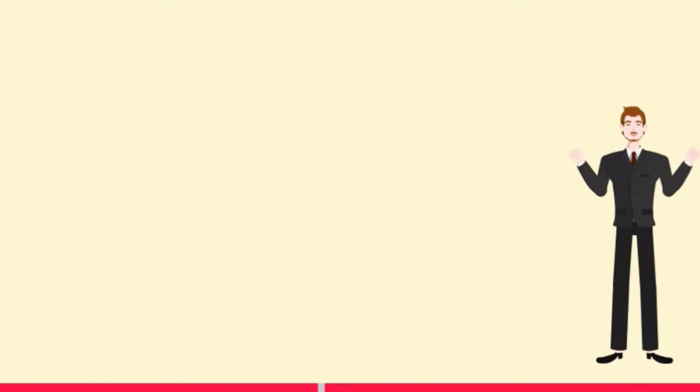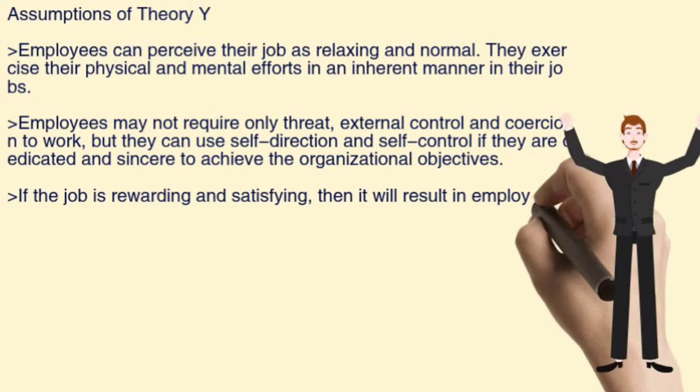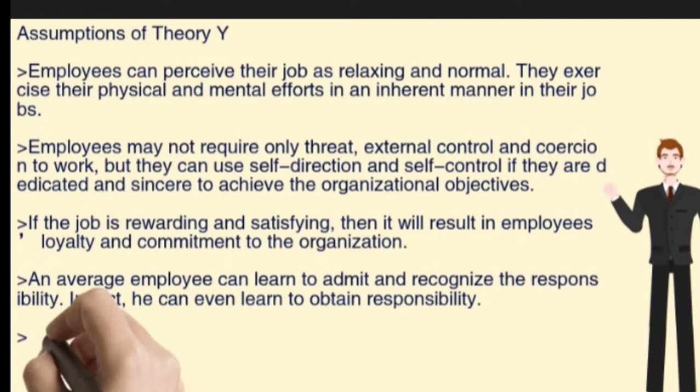In Theory Y, employees can perceive their job as relaxing and normal. They exercise their physical and mental efforts in an inherent manner in their jobs. Employees may not require only threat, external control, and correction to work, but they can use self-direction and self-control if they are dedicated and sincere to achieve their organizational objectives. If the job is rewarding and satisfying, then it will result in employees' loyalty and commitment to the organization. An average employee can learn to admit, recognize, and even obtain responsibility.